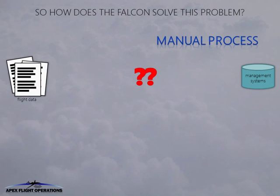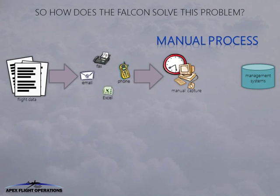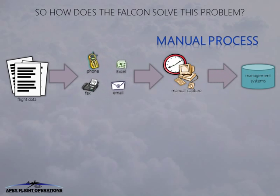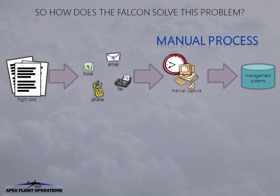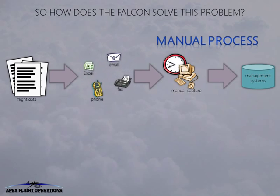In most aviation businesses, flight data reaches management systems through a manual process. Data measured by the flight crew is recorded on flight folios, which are then relayed to the operations team by means of email, phone, fax or spreadsheets. This data is then manually captured into the management systems by operations staff. Although the management systems have some data validation, errors can frequently creep in due to human error.